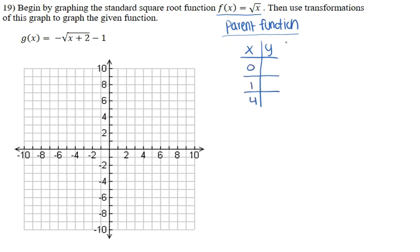For our parent function f(x) = √x, we plug in our x values. Since f(x) is actually y, we get: √0 = 0, √1 = 1, and √4 = 2. Because 0×0 = 0, 1×1 = 1, and 2×2 = 4.